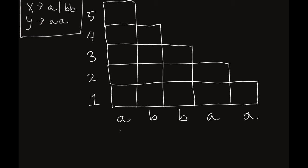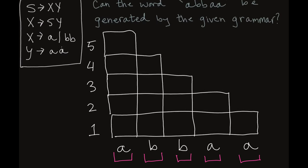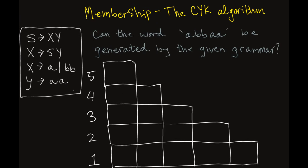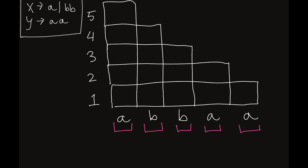The first thing we're going to do is look at all of the substrings of length one. We've got A, B, B, A, and A. Looking back at our grammar, we're looking for a non-terminal that can produce A, and we see that X can produce A. X is the only one, so we'll put X in the first spot.